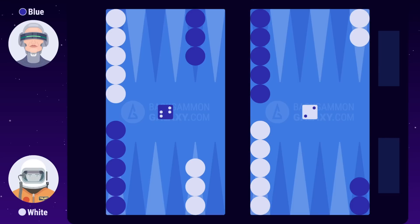Now white rolls 2, and blue rolls 3. The highest number wins the opening roll, so blue makes the first move using 3-2. She can either choose to combine the numbers and move one checker, or play the numbers separately and move two different checkers. Blue confirms the move by clicking on the dice.